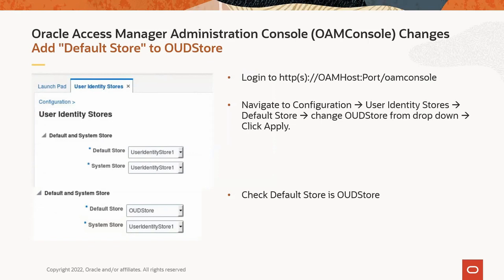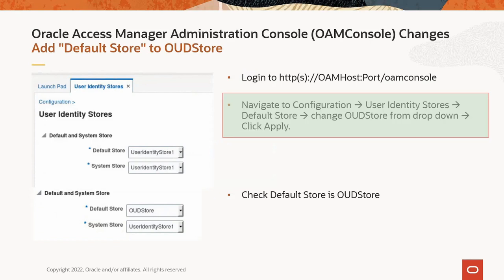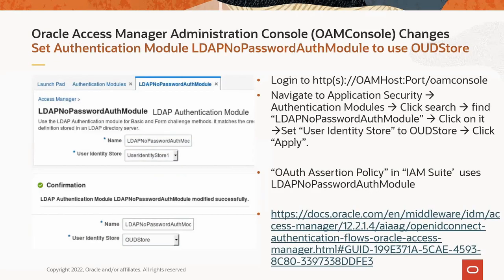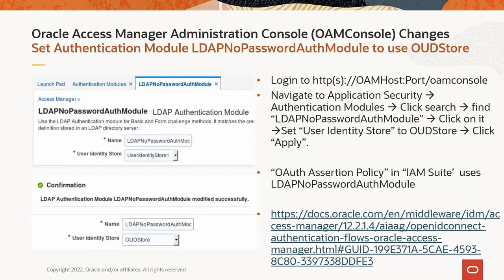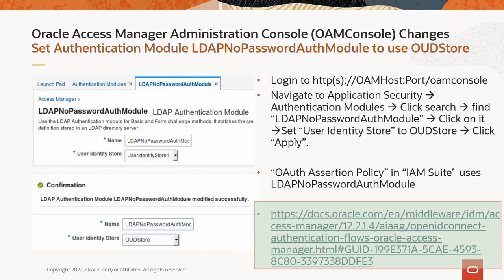Here we'll set the LDAP no-password auth module to use the OUD store. Navigate to the path shown in the slide, find the authentication module LDAP no-password auth module, and change the user identity store to use the OUD store. After making the changes, click Apply and make sure you see the confirmation. We do this change because it is used in the authentication scheme that protects the OAuth authorization endpoint. See the document link for more information.